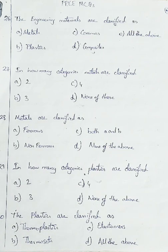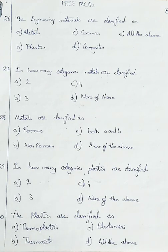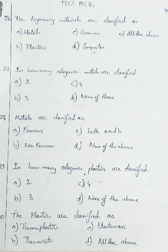Question number 26: the engineering materials are classified as — Option A: metals, Option B: plastics, Option C: ceramics, Option D: composites, and Option E: all the above. We know engineering materials are classified as metals, plastics, ceramics, and composites, so we will be going with all the above.